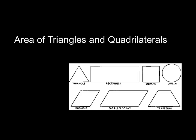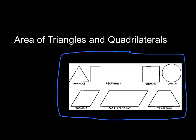Area of triangles and quadrilaterals. We are going to be finding the area of these shapes, so you can copy them down. One thing I do want to point out is that what we know as a trapezoid you can also call a trapezium. Go ahead and copy these shapes down.